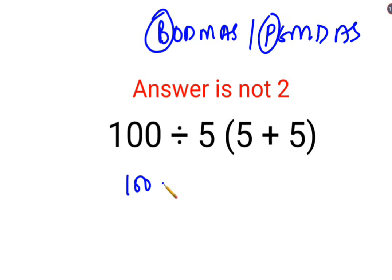So first we will keep the rest of the question as it is and we will solve the bracket which is 5 plus 5 which is 10 and since there is no sign between this 5 and the bracket means it is multiplication.